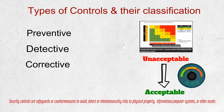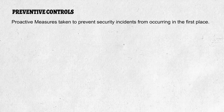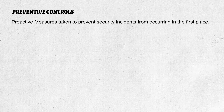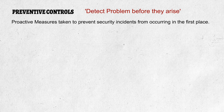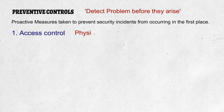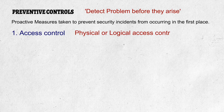First, let's define what preventive, detective, and corrective controls are. Preventive controls are measures taken to prevent security incidents from occurring in the first place. They are proactive in nature and are implemented to reduce the likelihood of a security breach. Preventive control means detecting problems before they arise. An example of preventive controls includes access control, which can be logical or physical, preventing unauthorized access by restricting access to only authorized individuals.